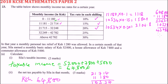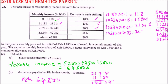Subtracting that amount, we move to the twenty-five percent bracket. We take ten thousand five hundred and thirty-four and multiply by 0.25, which gives us two thousand six hundred and thirty-three point five. That is the tax for the twenty-five percent bracket.